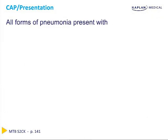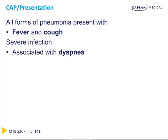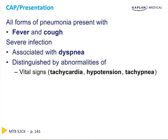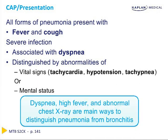While all forms of pneumonia present with fever and cough, only the most severe cases will present with dyspnea, abnormalities of vital signs including tachycardia, hypotension, or tachypnea, or mental status changes. Importantly, the way to differentiate pneumonia from bronchitis is that dyspnea, high fever, and an abnormal chest x-ray are indicative of pneumonia, while these are typically not seen in bronchitis.